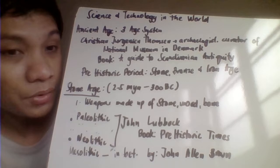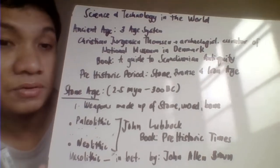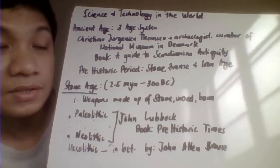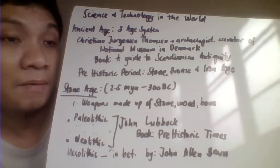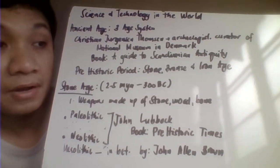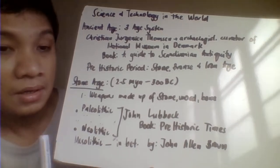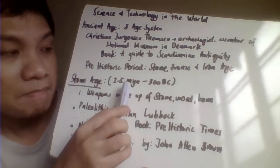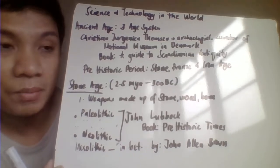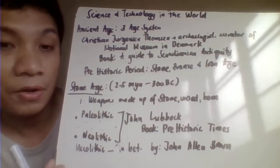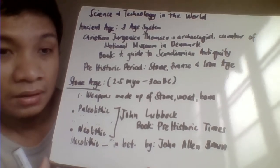Objects made up of stone in the museum belong to the Stone Age; those made of bronze belong to the Bronze Age; and those made of iron belong to the Iron Age. The Stone Age occurred from 2.5 million years ago up to 300 BC. It is called the Stone Age because all the materials and tools used by the people of those civilizations were made up of stone.